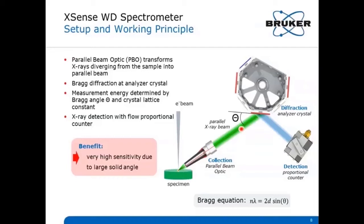The resulting parallel X-ray beam hits one of the flat crystals, where Bragg diffraction occurs. There are up to six crystals on the turret. Only photons of a certain energy fulfilling the Bragg conditions are reflected towards the proportional counter, which is used for X-ray detection. According to the Bragg equation, the wavelength lambda of these photons is a function of the adjustable Bragg angle theta,